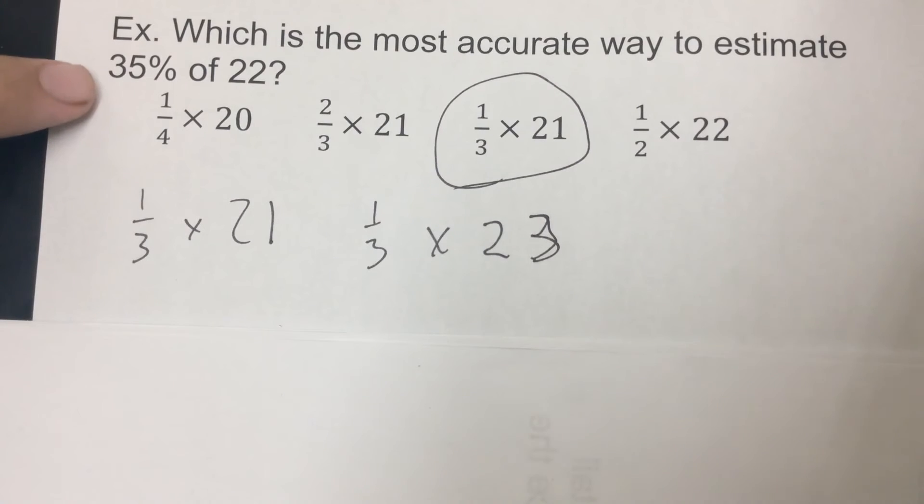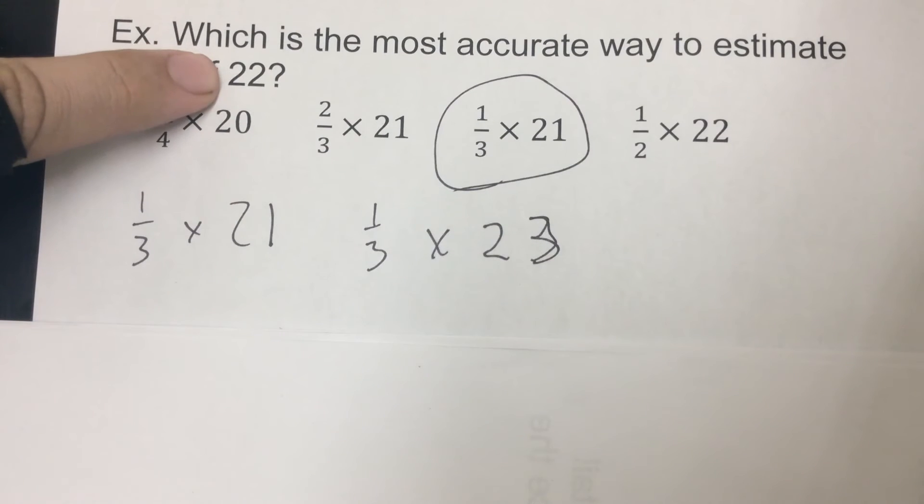You're gonna go, well, 22 is one away from 21 and it's one away from 23, how do I know which one I'm gonna do? Well, what we figured out doing the iXL homework is if you go down—so 35% would round down to 33% in order to be one-third—we're gonna round the second one up to balance it out.